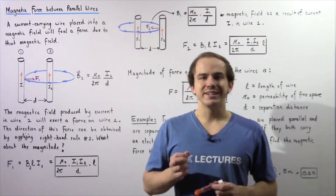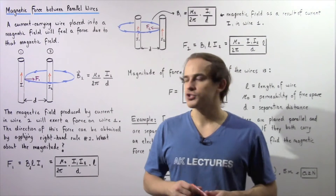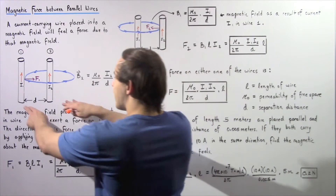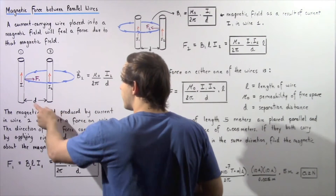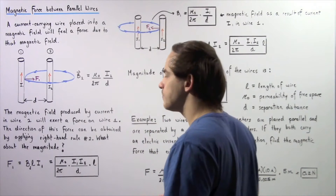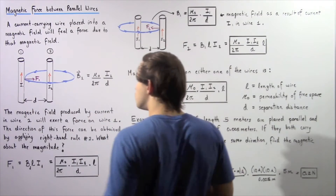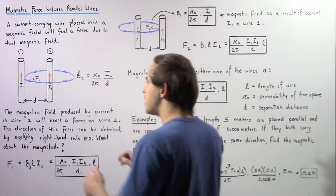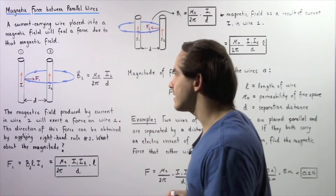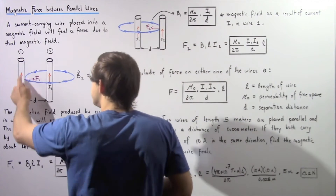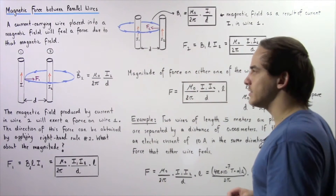Let's begin our discussion on the magnetic force that exists between two parallel wires. We have two parallel wires separated by a distance d. The electric current in wire one and wire two point in the same direction — the positive direction along the y-axis. The electric current in wire one is given by I1 and in wire two by I2.